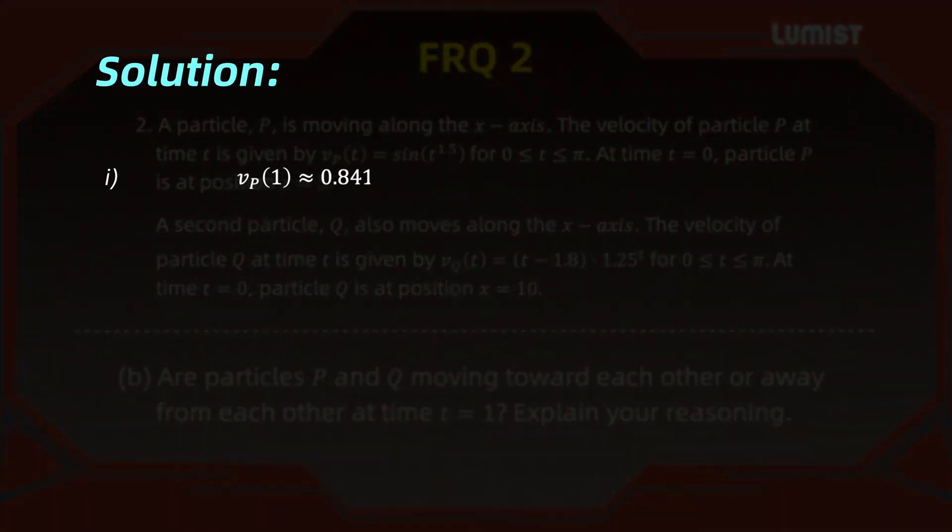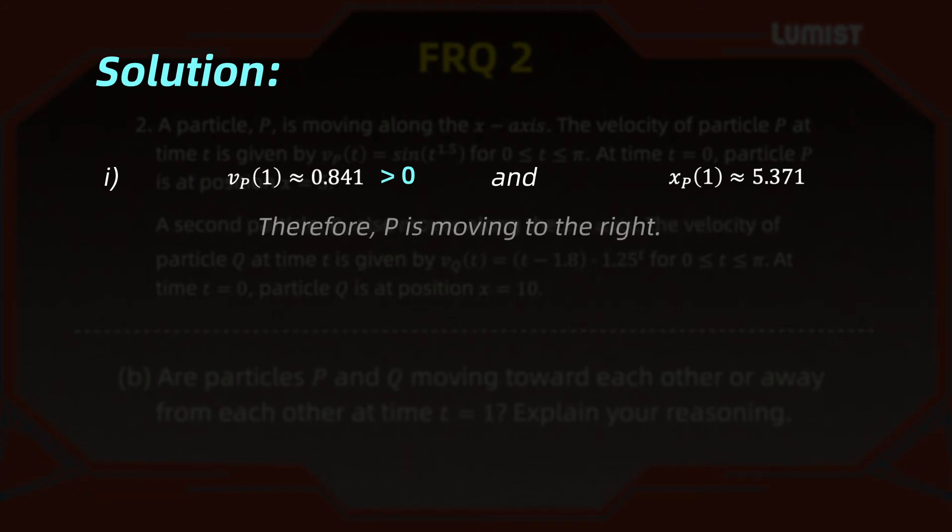For the solution, we're going to compute the velocity of particle P when t equals 1. This is basically plugging 1 in here. We get approximately 0.841. Now we have to look at the position. The position of this particle when t equals 1 was found to be approximately 5.371. Notice that the velocity is positive. So what is the meaning of that? That means P is moving to the right because the velocity is positive. That's regarding P.